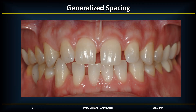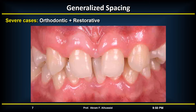Spaces can be closed by retracting protruded anterior teeth or by mesializing the posterior teeth. In severe cases of hypodontia, a combined orthodontic-restorative approach can be used in which orthodontics collects the spaces in one place and the restorative part replaces the missing teeth.